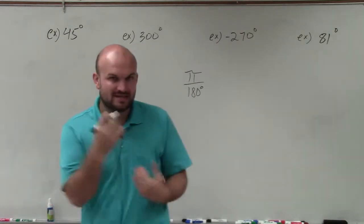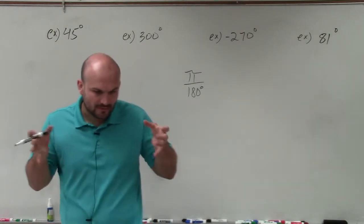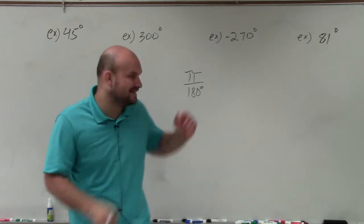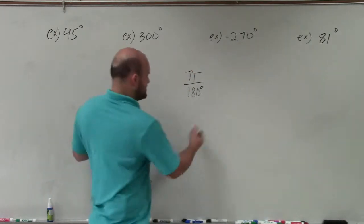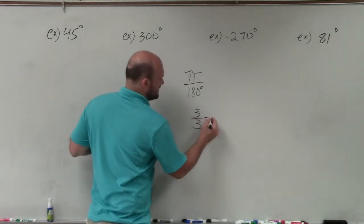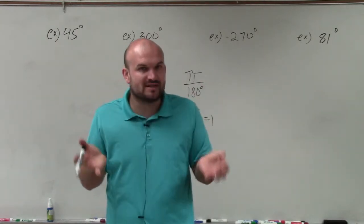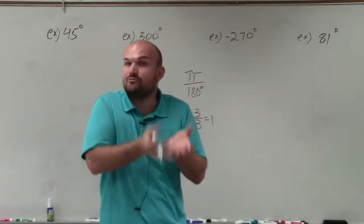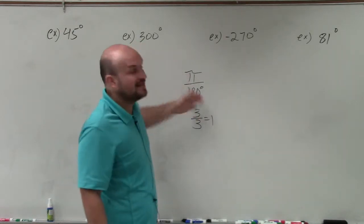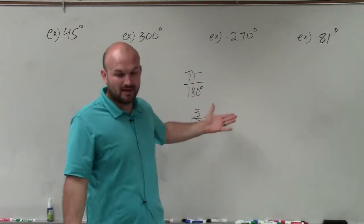And notice, if you remember when we talked about the measurement of pi and 180, these are equivalent to each other, right? Just like if I had 3 over 3, we know that's equal to 1. Well, pi over 180, that's still equal to 1 as well. It's just in different formats. One's in radian form, which would be pi, and the other one is in degree form, which would be 180 degrees.